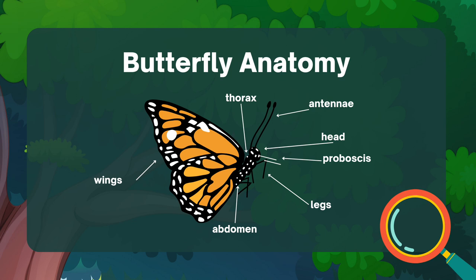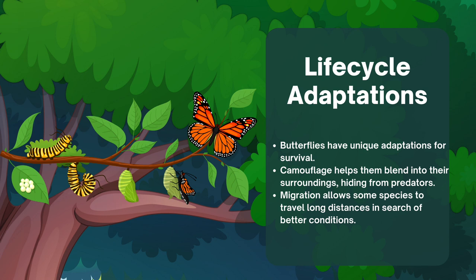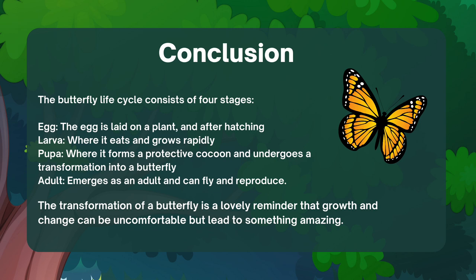Butterflies have unique adaptations for survival. Camouflage helps them blend into their surroundings, providing protection from predators. Migration is another remarkable adaptation, allowing certain butterfly species to travel long distances in search of better conditions.